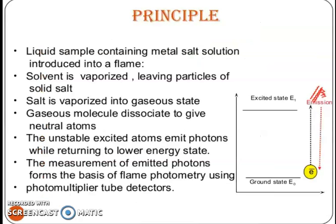The principle: a liquid sample containing metal salt solution is introduced into a flame. The solvent is vaporized, leaving particles of solid state salt. The salt is vaporized into a gaseous state. Gaseous molecules dissociate to give neutral atoms. The unstable excited atoms emit photons while returning to the lower energy state. The measurement of the emitted photons forms the basis of flame photometry using photomultiplier tube detectors. You can observe the ground state, excited state, emission, and absorption in this process.